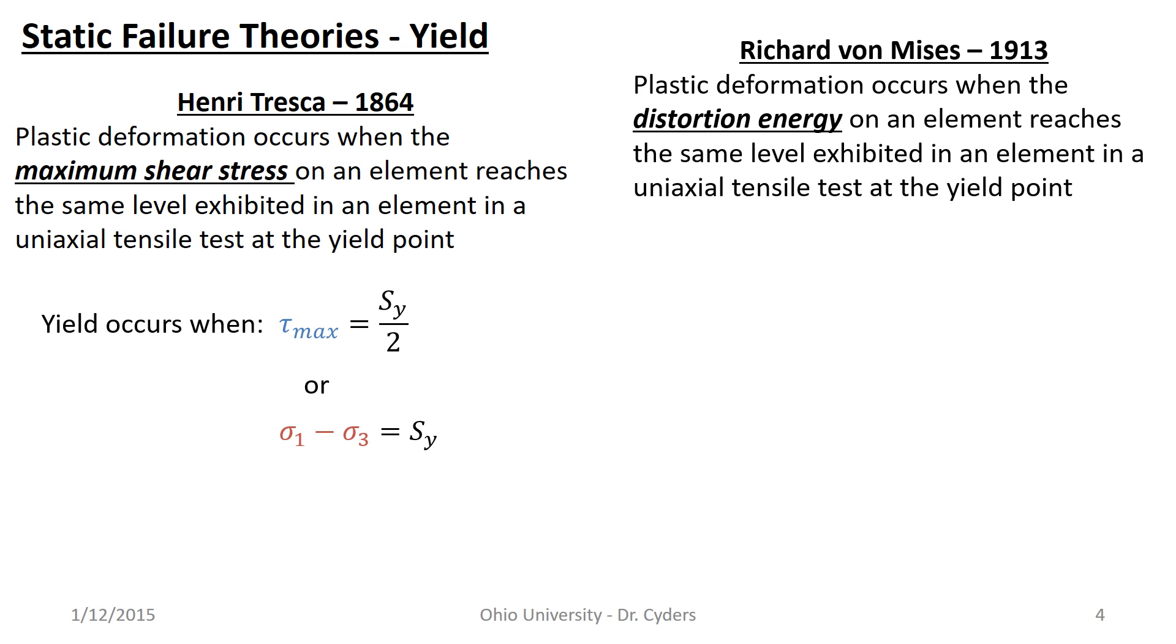He said that plastic deformation occurs when the distortion energy on an element reaches the same level exhibited in an element in the uniaxial tensile test at the yield point. It's a very similar expression as to what Tresca was looking at, but von Mises said it's not just maximum shear that matters. All three principal stresses matter and can contribute at once. Where Tresca only considers sigma-1 and sigma-3, von Mises approached it from a different way, and you can actually reach his result from a couple of different derivation approaches. Probably one that you'll encounter if you take a graduate level mechanics course would be to start with the second invariant of the stress tensor, and you can derive essentially the von Mises principle from that.